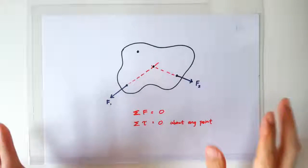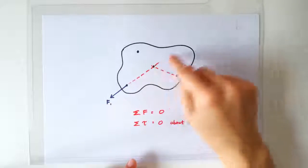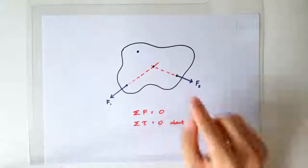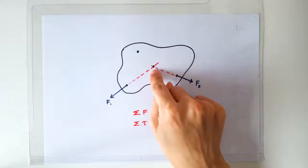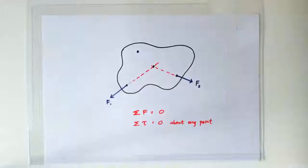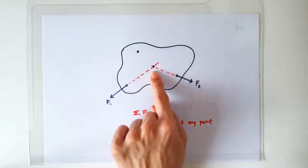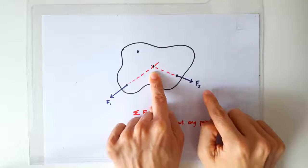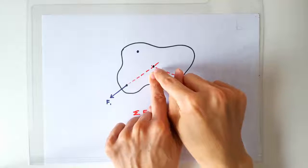Now, what if we extend the lines of action of F1 and F2, and we consider the moments about the intersection point? About the intersecting point, F1 is going to produce zero moment, F2 also has no turning effect about this point here.